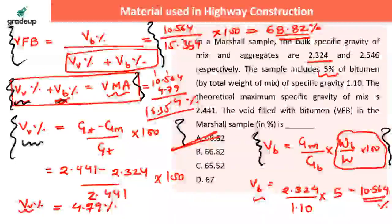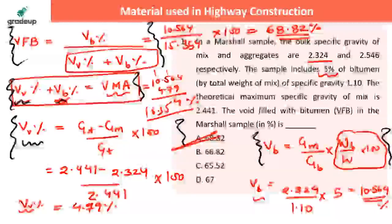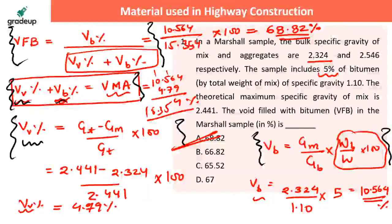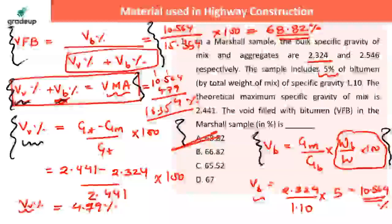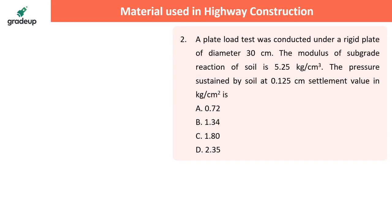So we have covered three important formulas: VFB = VB% / VMA; VMA = VB% + VV%; VV% = (GT − GM) / GT; and VB = (GM / Gb) × bitumen% . These formulas keep revolving throughout the highway construction material chapter. Let's move to the next question — it's related to the plate load test.